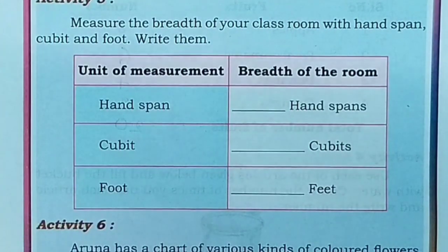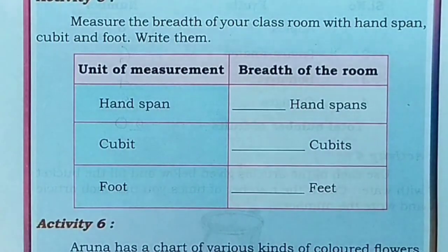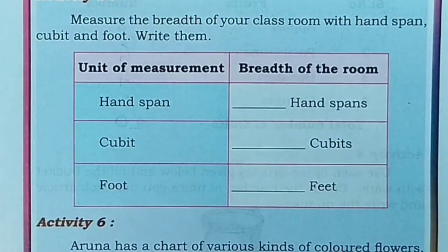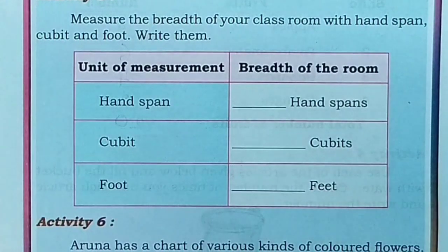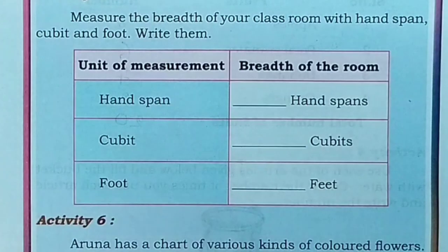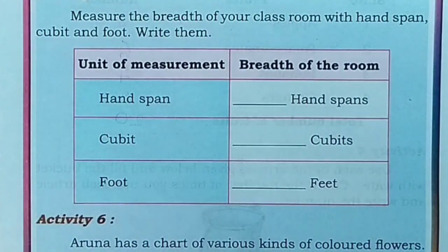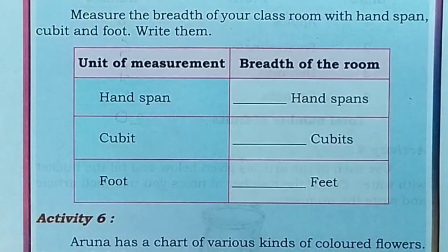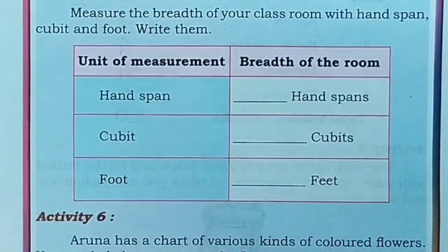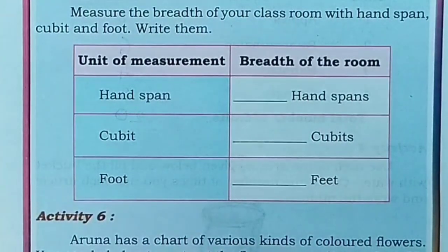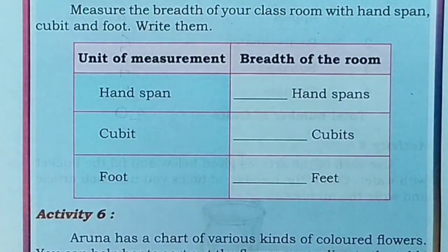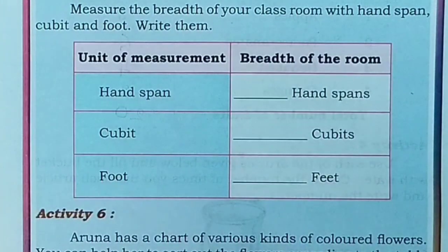The distance between your thumb finger and the little finger is handspan. What do you mean by cubit? The distance between the middle finger and the elbow. What is the foot unit? Foot means the length of the foot. So using this measurement we have to find the breadth of the room.